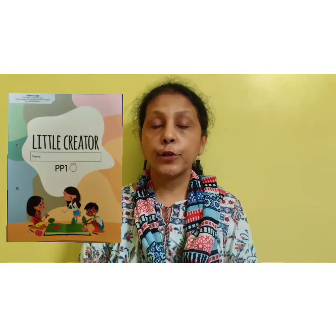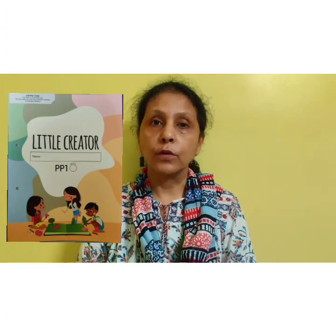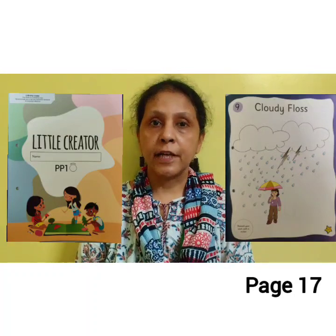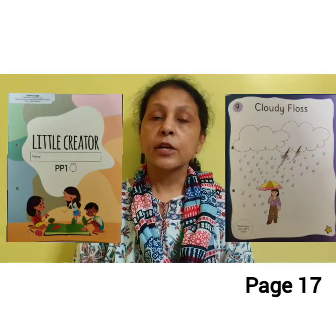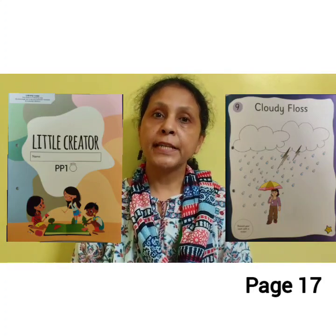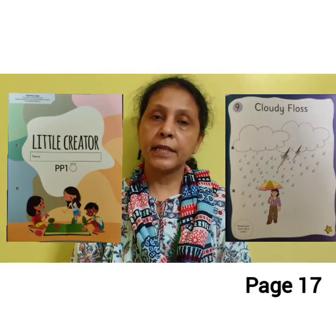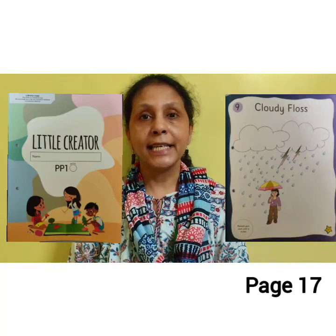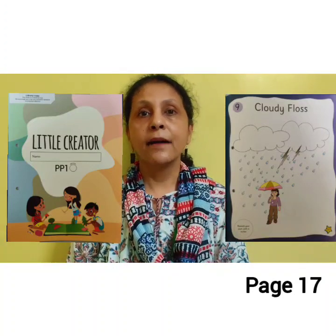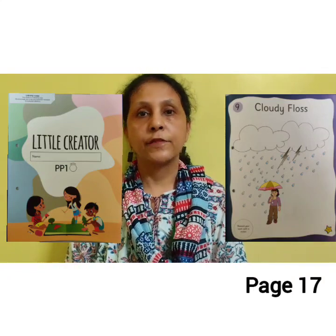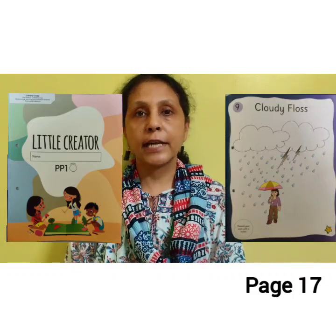It's time for home fun activity. You are going to open your little creator book to page number 17. There are instructions given on page number 16: paste cotton wool on clouds. You have to complete the activity on page number 17 — paste cotton on the clouds. Complete your activity neatly. Then mama will give you a sticker as your reward. The stickers are at the back side of the book. So enjoy your activity. Bye bye!